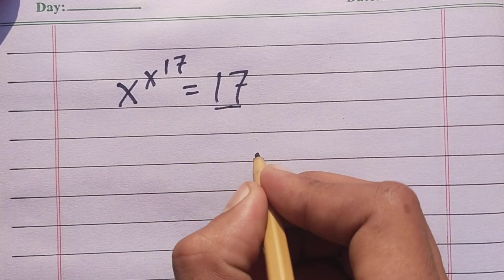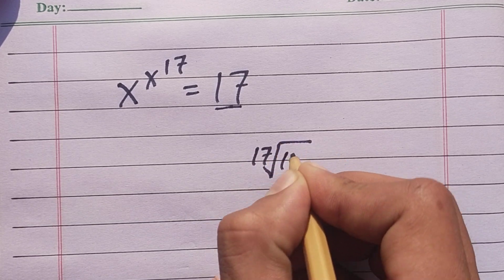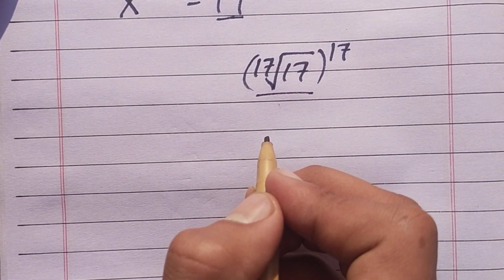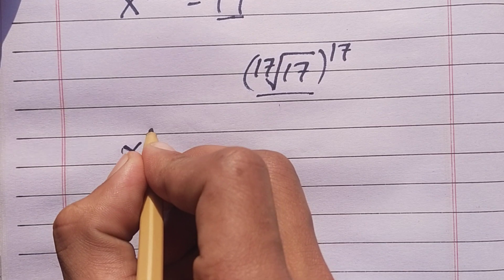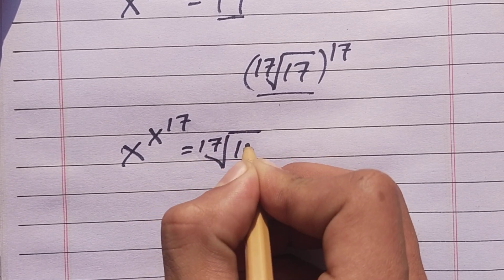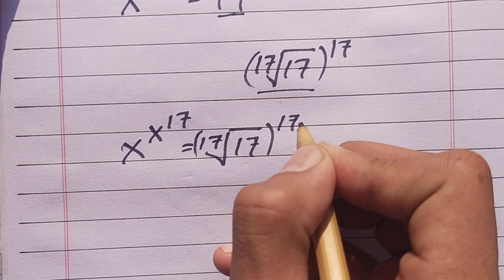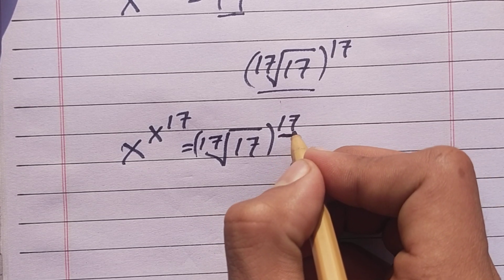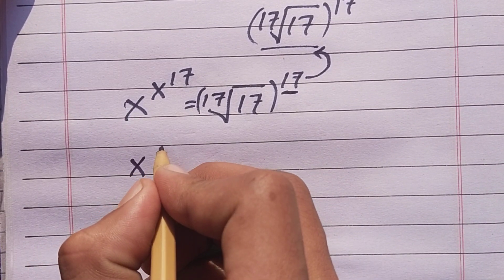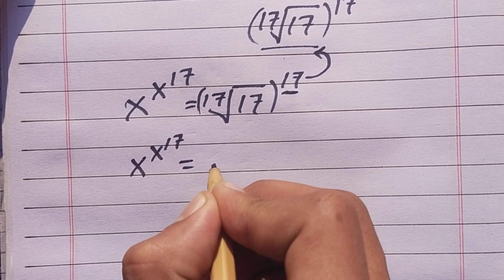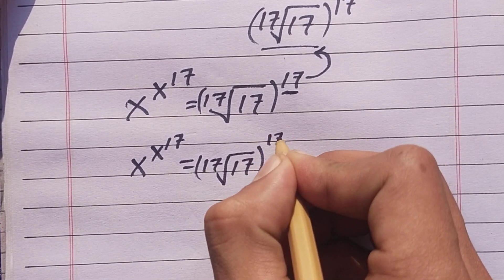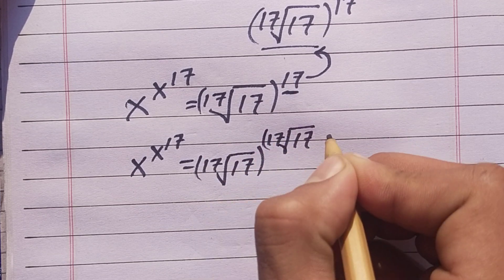We can write 17 as the 17th root of 17, raised to the power 17. Replacing 17 by this, we get x power x power 17 is equal to the 17th root of 17, raised to the power 17. Again, we have 17 in the power, so we replace that 17 as well, giving x power x power 17 is equal to the 17th root of 17, raised to the power of the 17th root of 17, power 17.